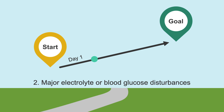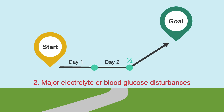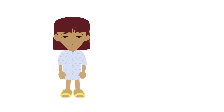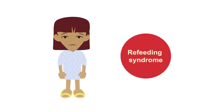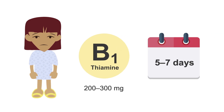For example, you might advance to three-quarters goal dextrose on day two and to goal on day three. Or if the electrolyte and blood glucose disturbances are significant enough, you might keep dextrose at half goal on day two before starting to advance. Always keep in mind that advancing TPN too quickly can exacerbate the effects of refeeding syndrome. If you suspect a patient is at risk, add an extra dose of 200 to 300 mg of thiamine with or without folic acid to the TPN bag for five to seven days, as thiamine helps with carbohydrate metabolism and patients at risk often have low thiamine levels.